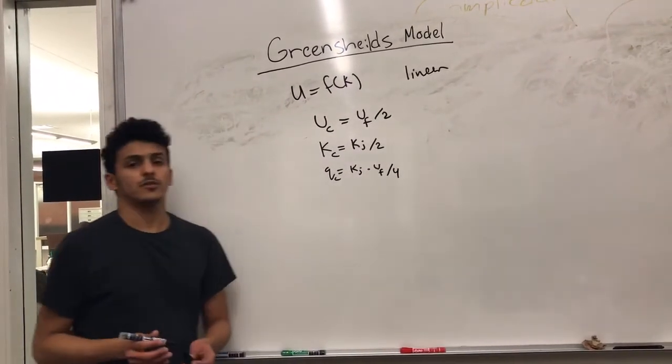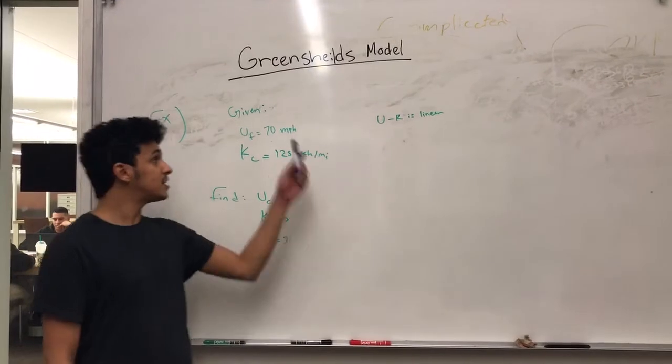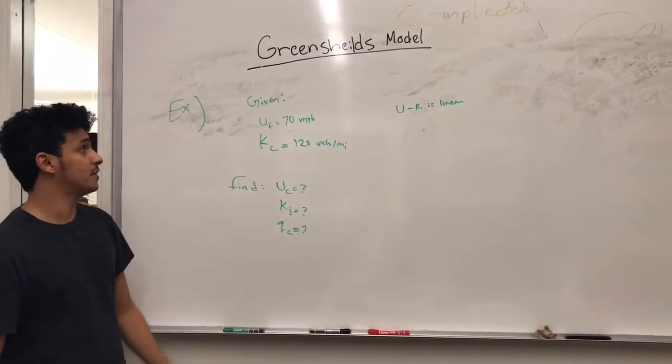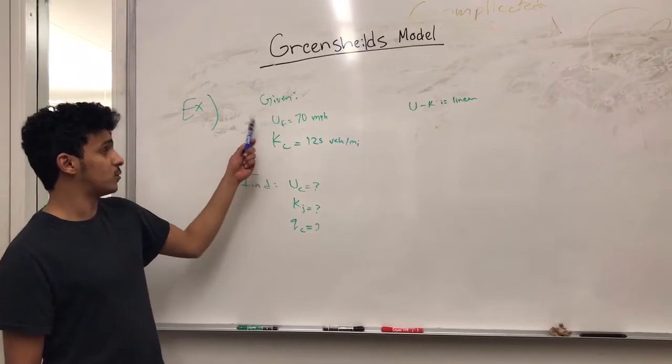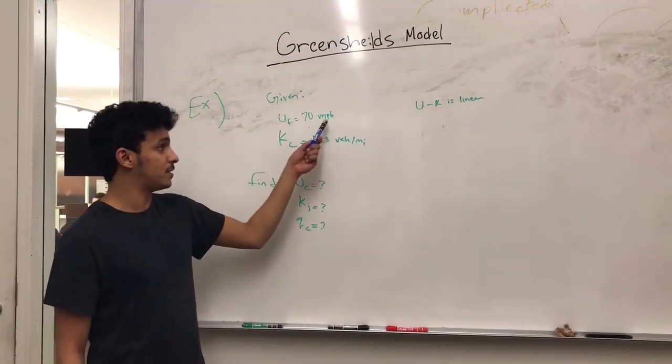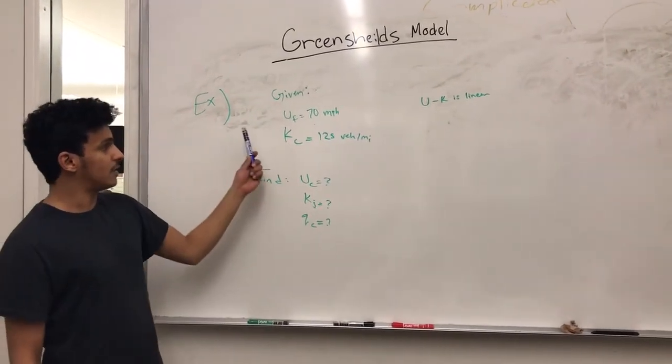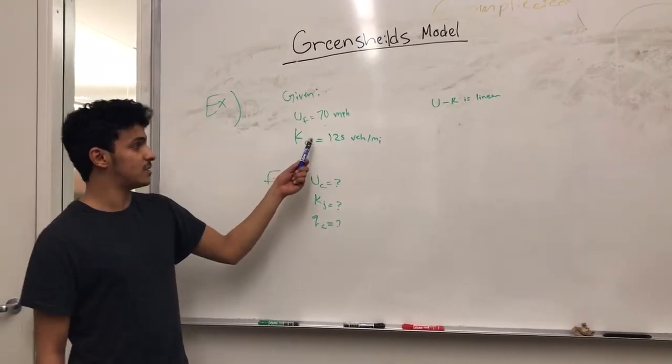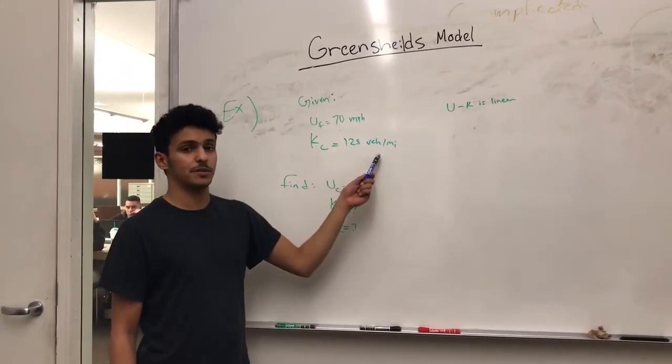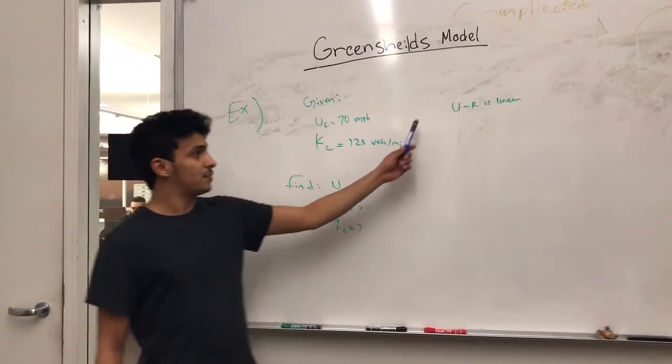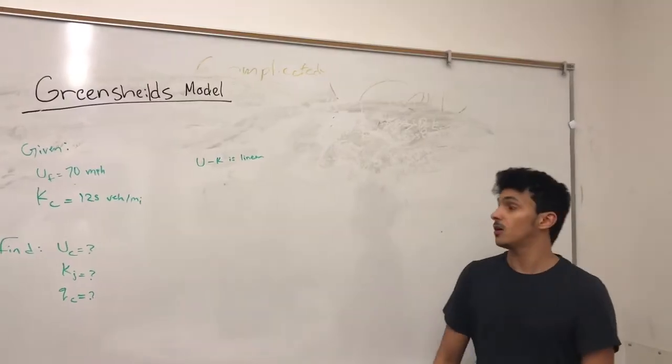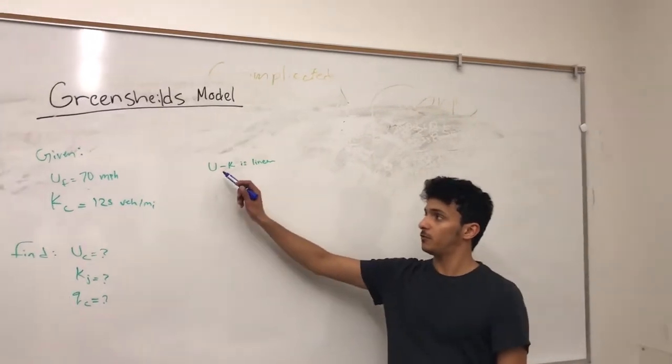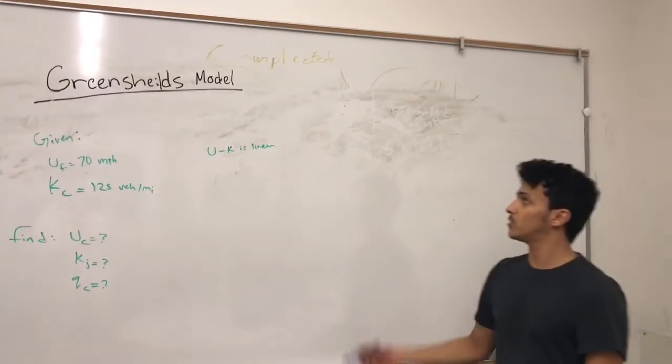Let's move on to an example. We are given the free flow speed which is 70 miles per hour and the density at capacity which is 125 vehicles per mile. And the U-K relationship is linear. So when the relationship of U and K is linear, we can use the shortcut.